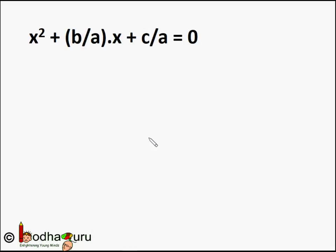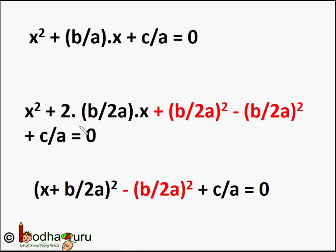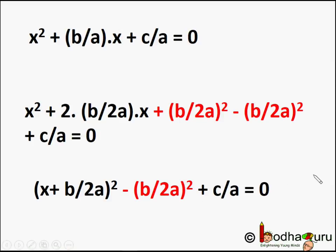Now we need to express the terms with x in the form of (x + a)² whole square. So we rewrite the second term, which is (b/a)·x, as 2·(b/2a)·x. And we add (b/2a)² to complete the square and subtract that to balance. So the equation will be (x + b/2a)² minus (b/2a)² plus c/a.